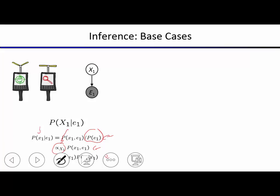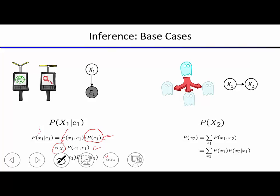The second base case is time elapse. Given the distribution for x1 and a transition model, we want the distribution for x2. We write the marginal for x2 as a sum over x1 of the joint between x1 and x2, then decompose using the product rule: p(x2) = sum over x1 of p(x2 | x1) * p(x1). This gives the distribution for the next time step.